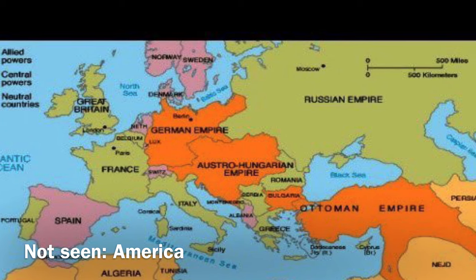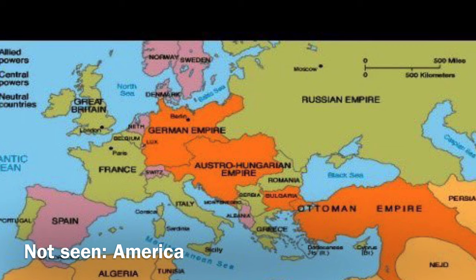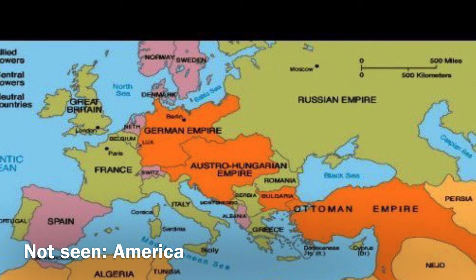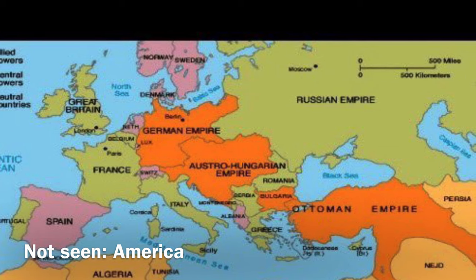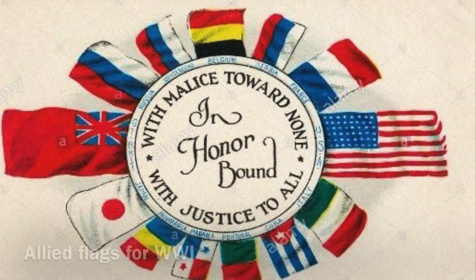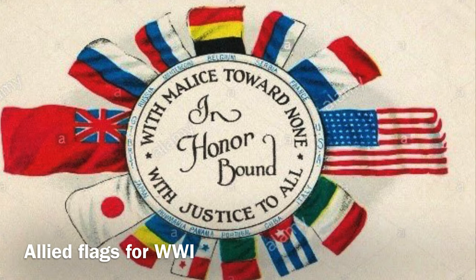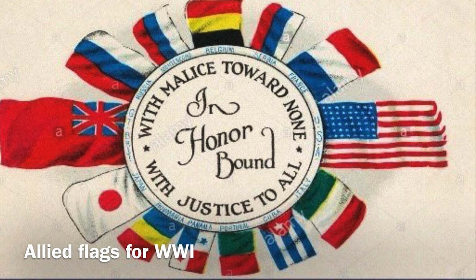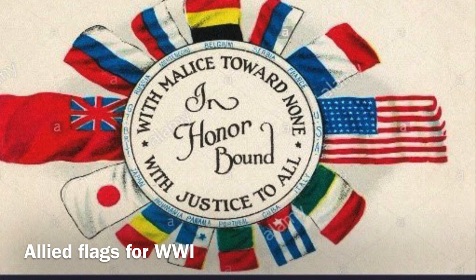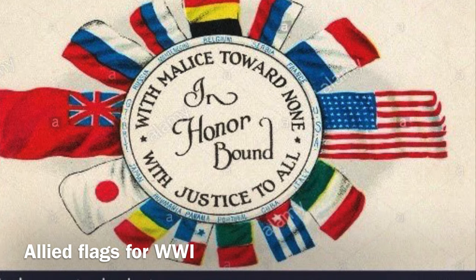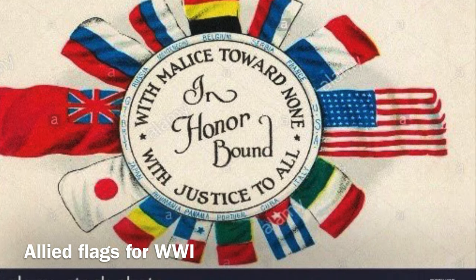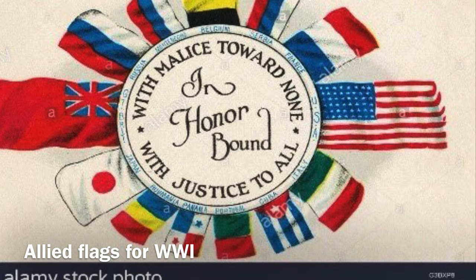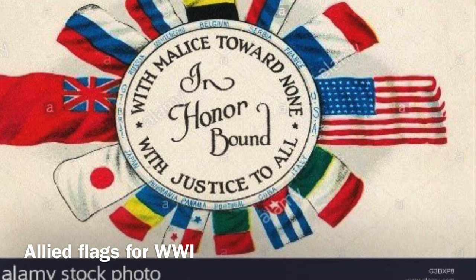Despite all of these countries being involved in World War I, almost all of the fighting was actually between Britain, Germany, and Russia. Here are the flags of the countries that won World War I, and how they used the momentum and the victory of World War I to go on to create the League of Nations.